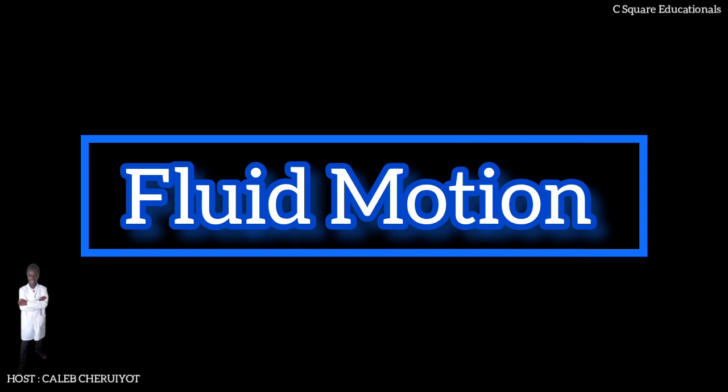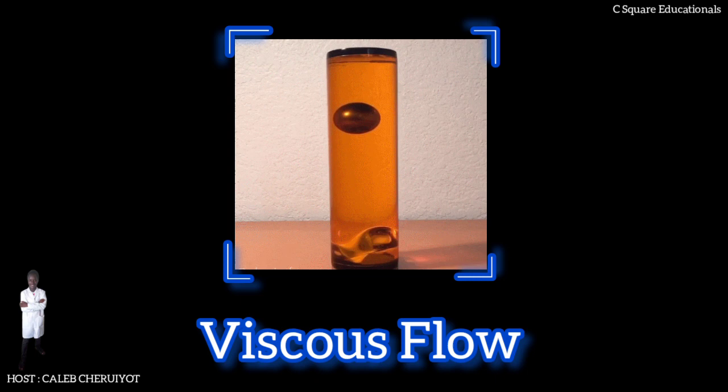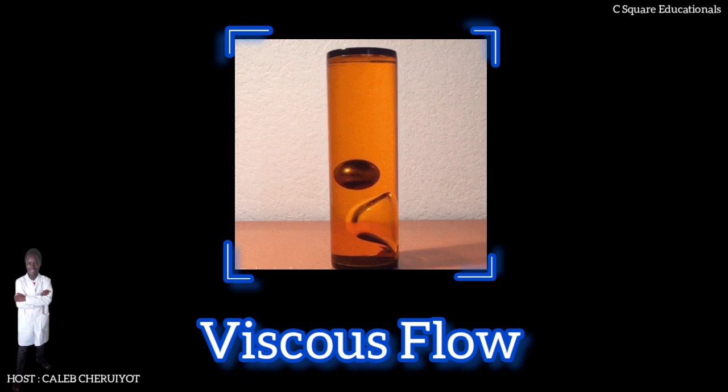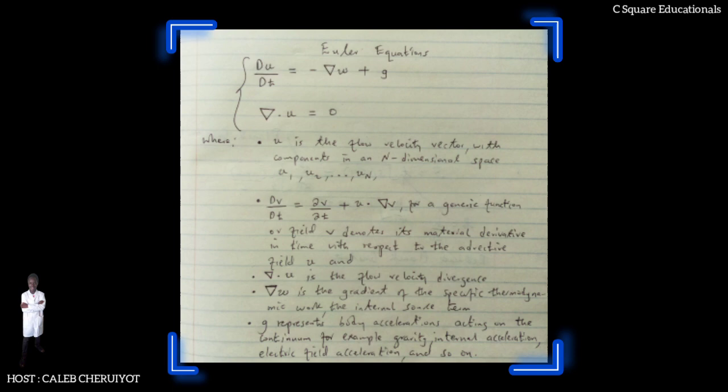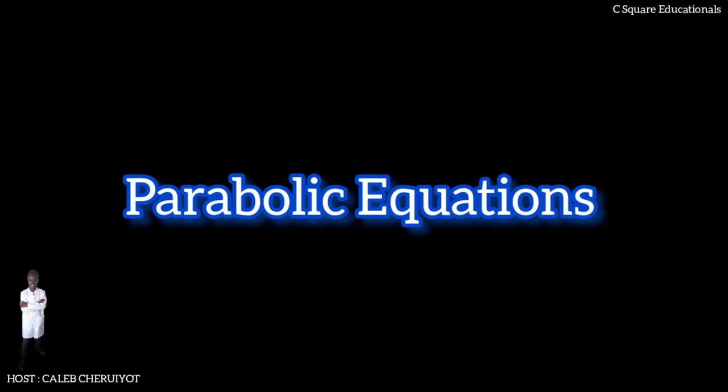Hence describing viscous flow. The difference between them and the closely related Euler equations is that Navier-Stokes equations take viscosity into account while Euler equations model only inviscid flow. As a result, the Navier-Stokes are a parabolic equation and therefore have better analytic properties at the expense of having less mathematical structure. For instance, they are never completely integrable.